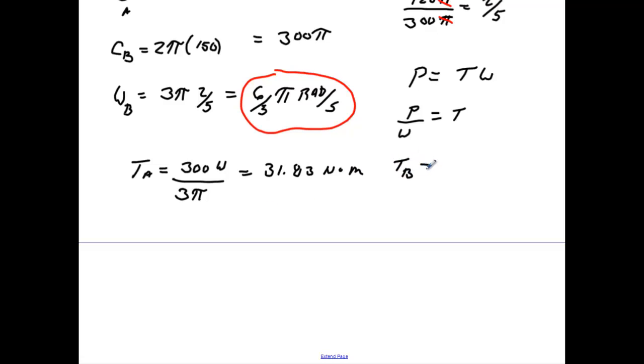We'll do the same thing for B. Torque at B would equal to the 300 watts that's being applied, divided by 6 fifths of that, 1.2 times π. We'll do that. We'll get 79.58 newton meters.